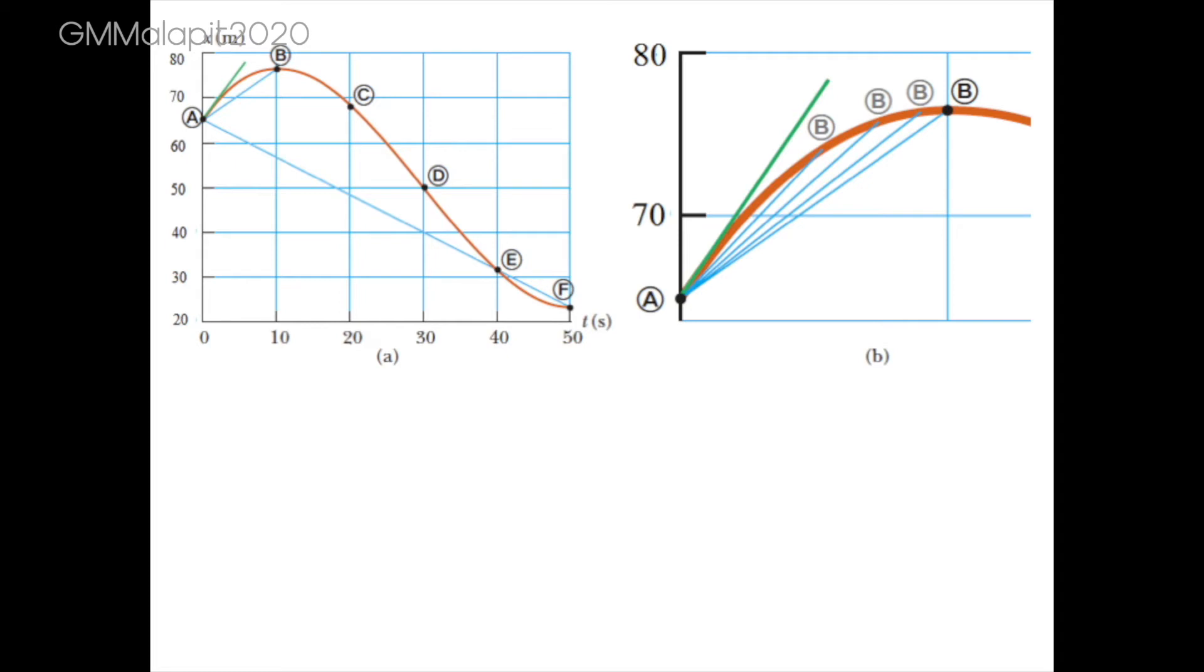the average velocity during the interval is given by the slope of the blue line. And for the interval during which the car moved from location A to F, the average velocity is represented by the slope of the longer blue line.